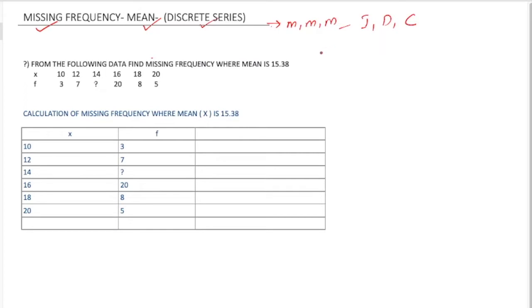Let's see the question. From the following data, find the missing frequency where mean is 15.38. So mean is already given here as 15.38. We need to calculate the missing frequency with the help of these data.